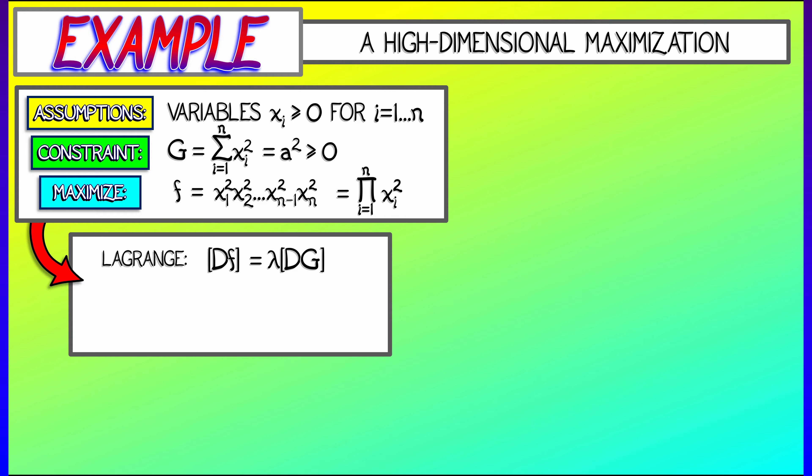Let's set up Lagrange. We need df equals lambda times dg. These partial derivatives are not so bad. Fix a variable xj. The partial of f with respect to that is 2 times xj times the product of the squares of all the non-xj variables. That's the left-hand side. The right-hand side we get simply 2 times lambda times xj.